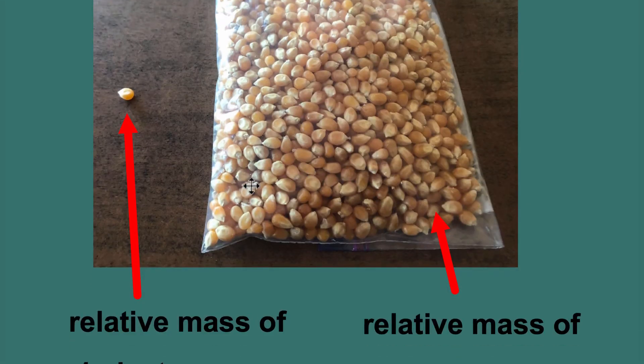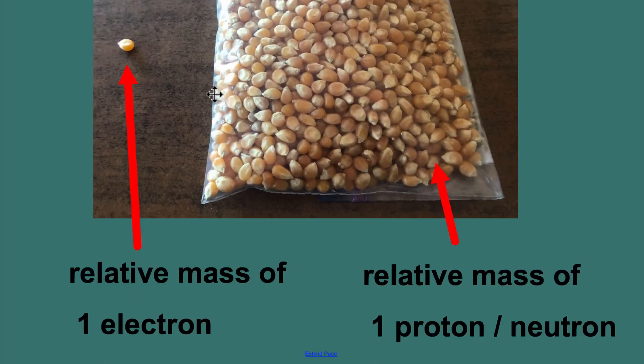So this might be something interesting for the students to try to do. You can get yourself some popcorn, they can figure out a way without actually counting 1836, but if we were to show this, it definitely demonstrates the fact that the electron has a very small mass compared with that of the proton and the neutron.